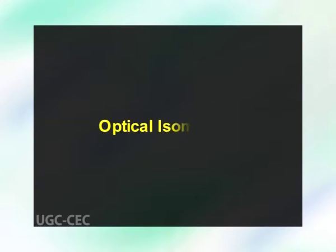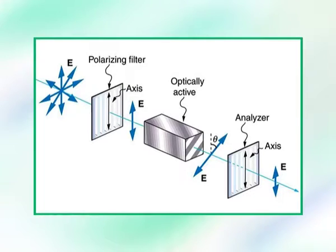Now optical isomerism. It has been observed that certain compounds have a remarkable power of rotating the plane polarized light towards right or towards left. The phenomenon of rotating the plane polarized light is known as optical activity, and the compounds exhibiting this property are known as optically active compounds. Compounds which have similar chemical and physical properties and differ only in their behavior towards plane polarized light are known as optical isomers, and the phenomenon is called optical isomerism.